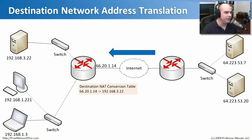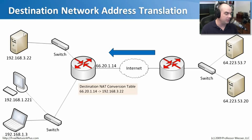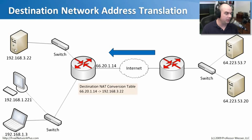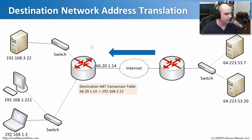Destination network address translation is when somebody out on the internet needs to access a service inside your network, all pointing to a single external IP address. You tell your router: if anybody is coming in to 66.20.1.14 on port 80, convert that destination address to 192.168.3.22 and send it on its way. The router acts as a front man, providing firewalling — nobody can talk directly to that internal server without first being destination NATed through the router.